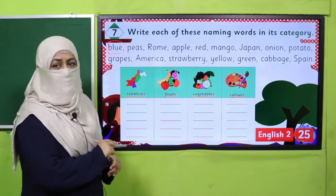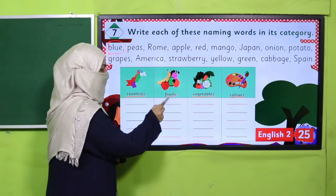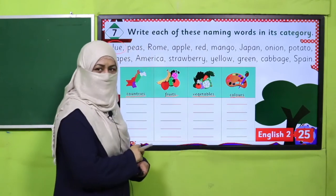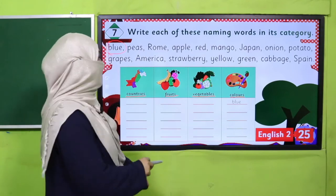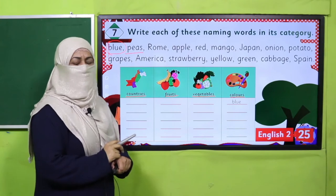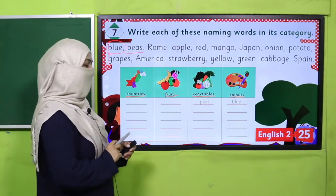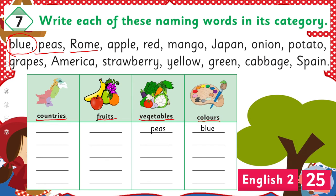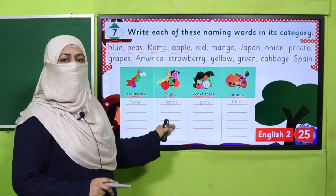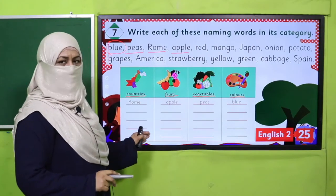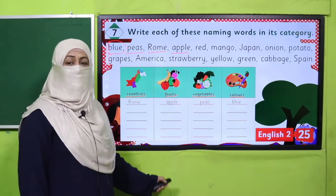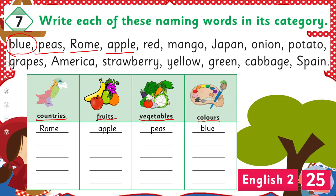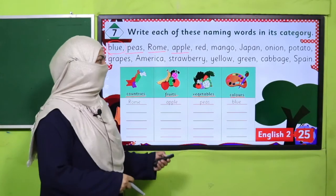The first name is 'blue' — so what is blue? Is it a country, fruit, vegetable, or color? Yes, so blue will go to the color category. The next name is 'peas' — yes, it's a vegetable which we eat, and children should eat it a lot. The third name is 'Rome' — it's a name of a city, so it will come under countries. Next is 'apple' — apple is a fruit. Likewise, keep reading the names and categorizing them in the table. Pause the video and complete this activity in your book.